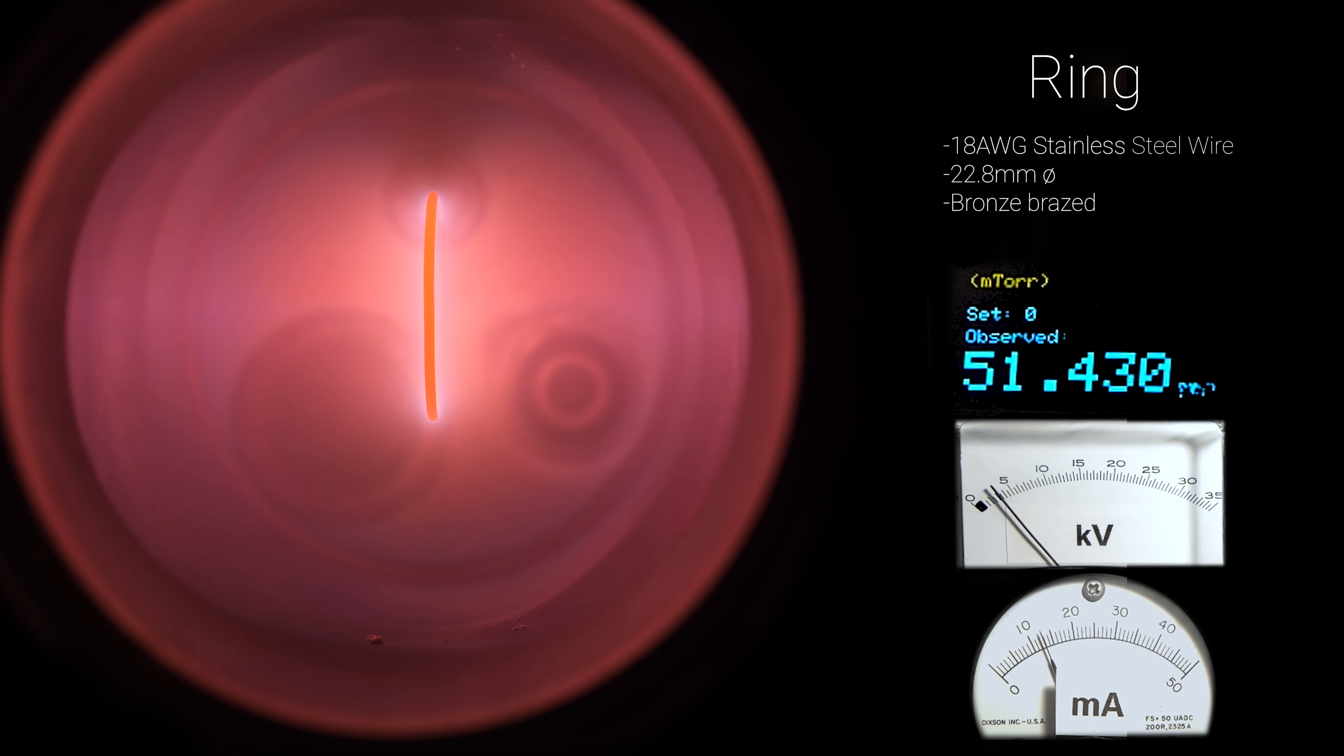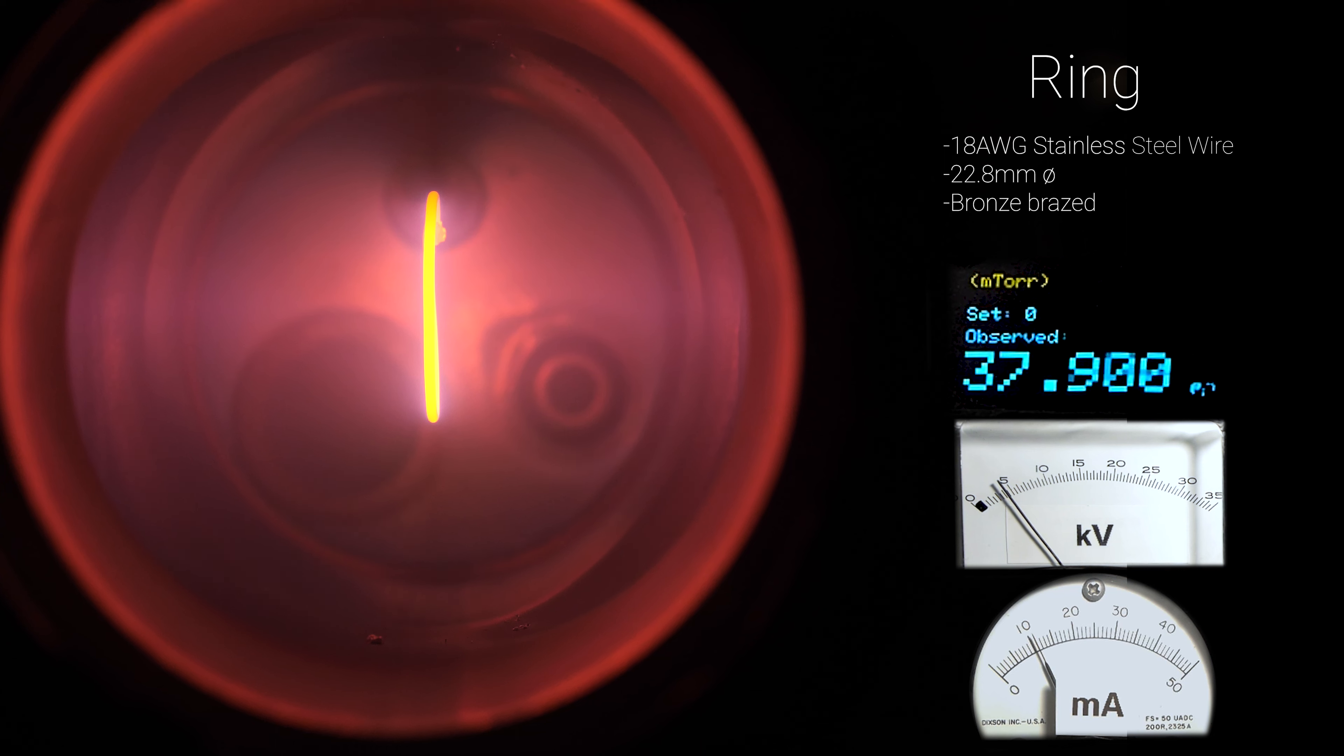They accelerate toward the grid's negative electrostatic charge, but because they still have so much energy, they stay charged long enough to shoot past the grid, get repelled by the chamber's positively charged outer walls, and then accelerate back again toward the grid.